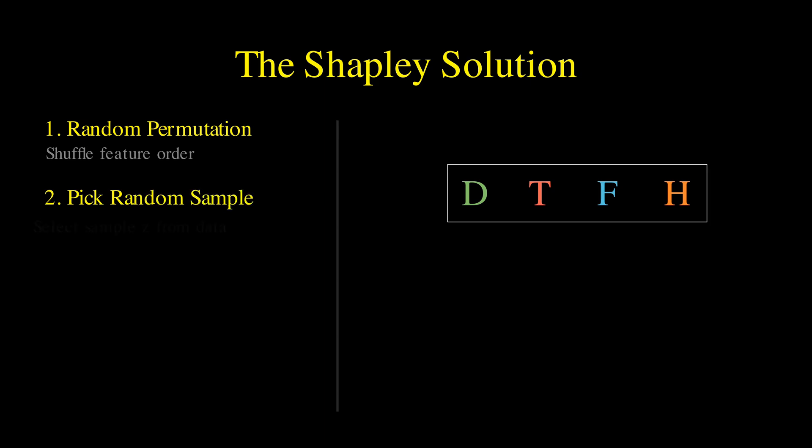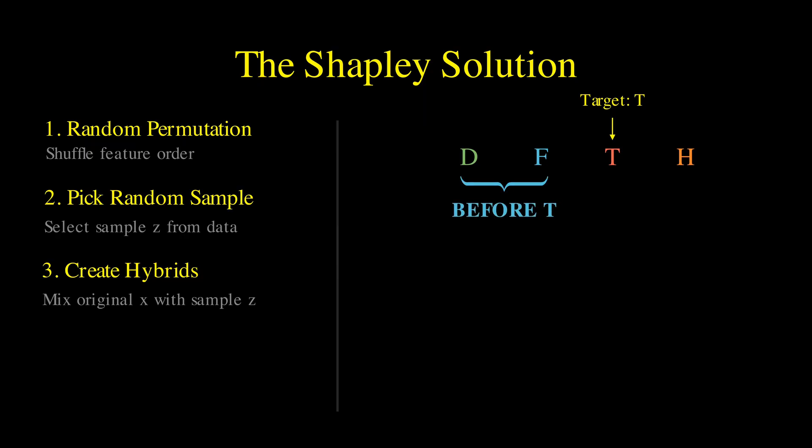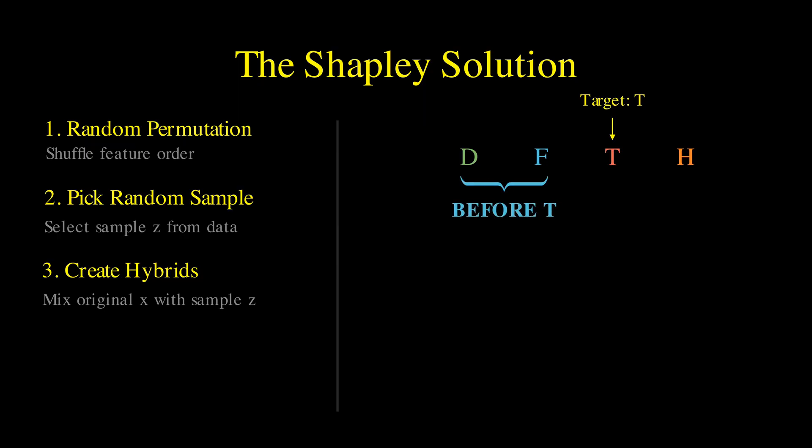Second, we pick a random sample from our dataset to serve as a reference. Third, we create two hybrid samples. Let's say we want to know the contribution of the temperature feature. In our ordered list, we look at all features that come before temperature. For these features, we take their values from our original Tuesday sample. For features that come after, we take values from the random reference sample.